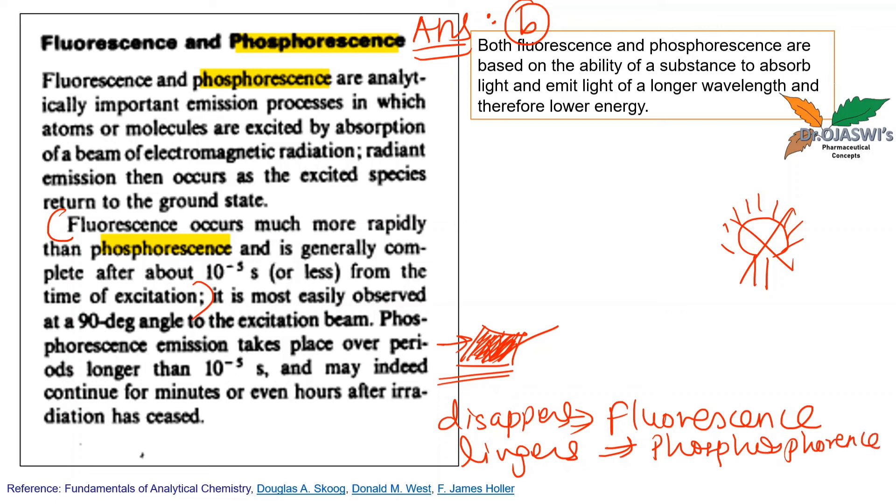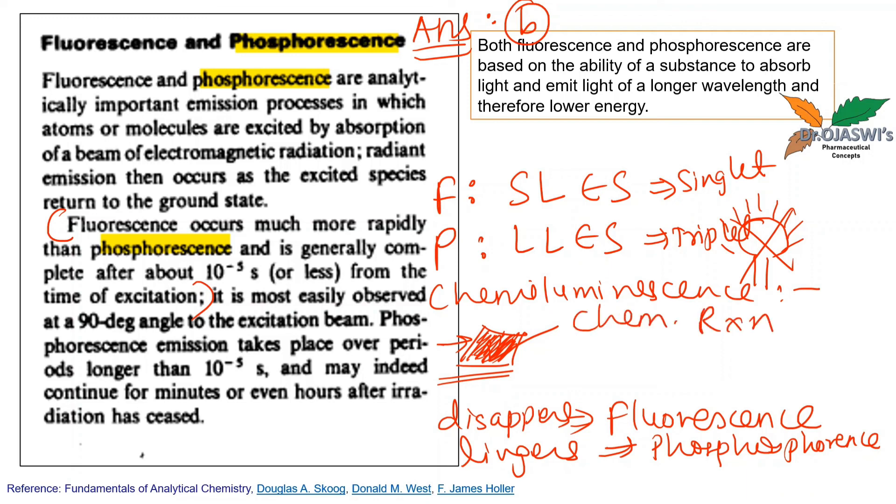And just before leaving, one more important point. Fluorescence involves short-lived excited state, which is also called triplet. Very commonly used term is chemiluminescence, where there is no excitation source but a chemical reaction. Chemical reaction provides energy to excite molecules or emission of photons. So that was all about fluorescence and phosphorescence.